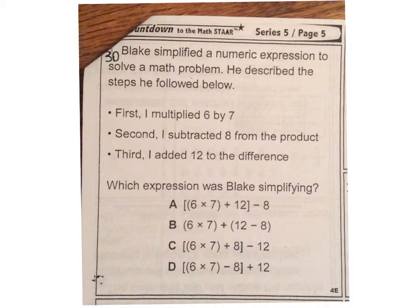Number 30. Blake simplified a numeric expression to solve a math problem. He described the steps he followed below. First, I multiplied 6 by 7. Second, I subtracted 8 from the product. Third, I added 12 to the difference. Which expression was Blake simplifying?